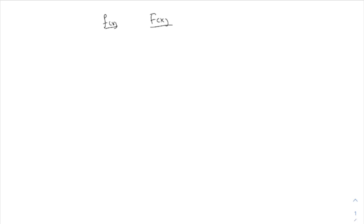We're talking about antiderivatives. Last time we had a little chart of basic antiderivatives, which you should have totally memorized. The most important one is x to the n. If you have just the power of x, the antiderivative is 1 over n plus 1 times x to the n plus 1 plus C. This works when n is not negative 1.